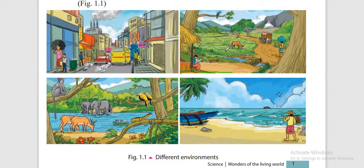But in the city picture, there are smokes from the factories, smokes from vehicles, dustbins and many others. So they are not suitable for human beings. They can cause more diseases for human beings.